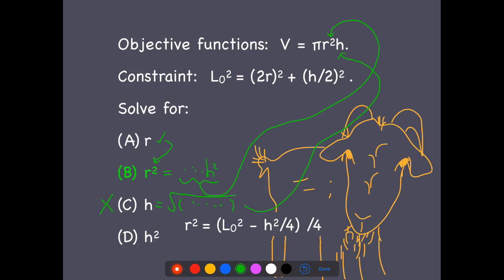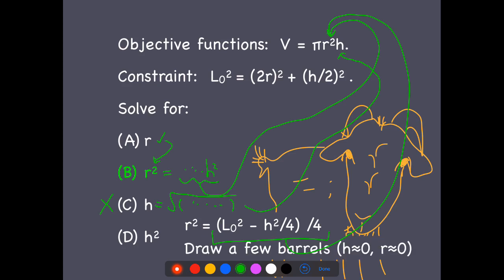All right, so this is what we get when we solve for r². And that's going to go right up here. And you can see then we're going to get a cubic function as our objective function in one variable h.